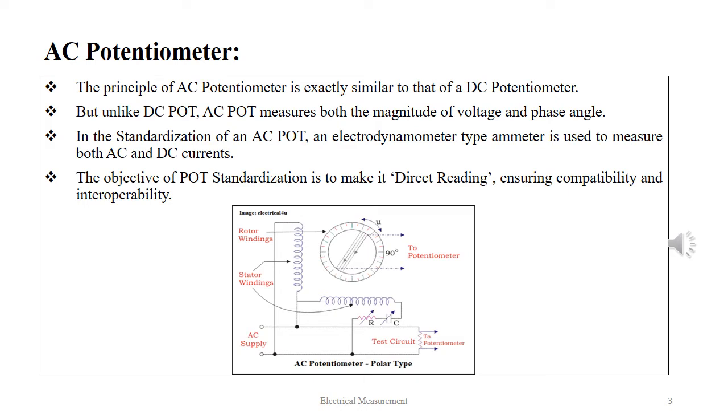similar to that of a DC potentiometer. But unlike DC pot, AC potentiometer measures both the magnitude of voltage and phase angle.